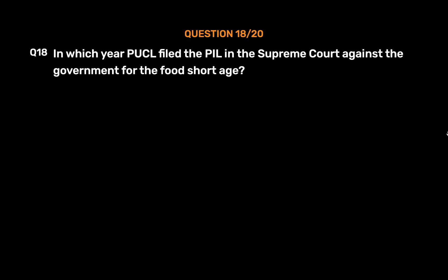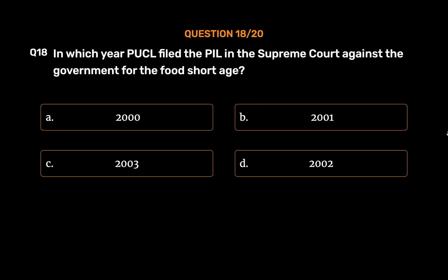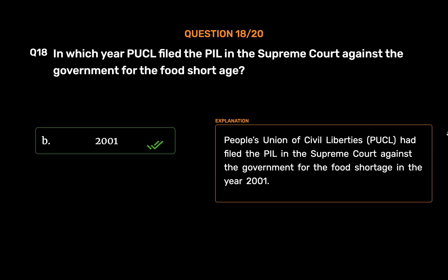Question No. 18. In which year did PUCL file the PIL in the Supreme Court against the government for the food shortage? Option A: 2000. Option B: 2001. The correct answer is Option B: 2001. People's Union of Civil Liberties (PUCL) had filed the PIL in the Supreme Court against the government for the food shortage in the year 2001.